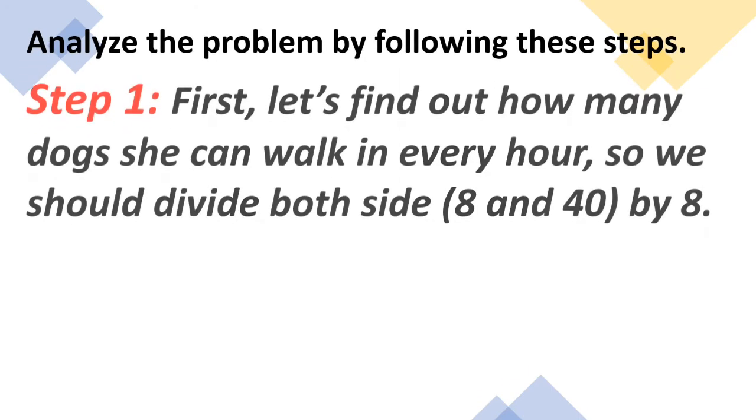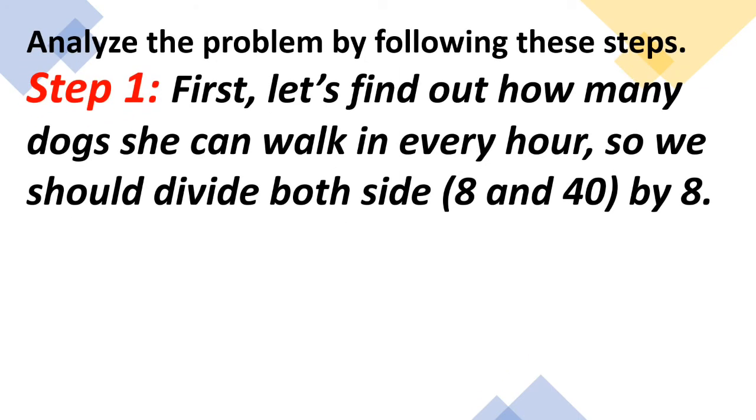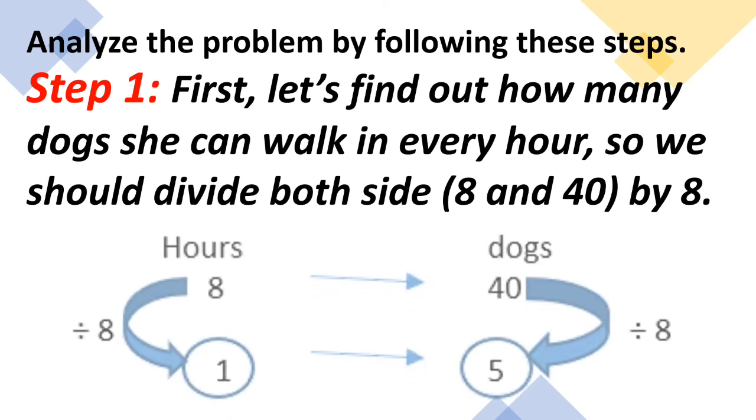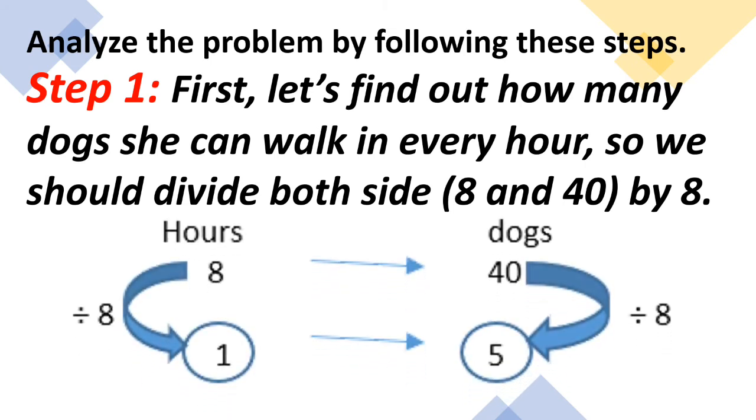Let us first analyze the problem by following this step. Step 1: First, let's find out how many dogs she can walk in every hour. So we should divide both sides, 8 and 40, by 8. So 8 divided by 8 is 1, and 40 divided by 8 is 5. So in 1 hour we got 5 dogs.